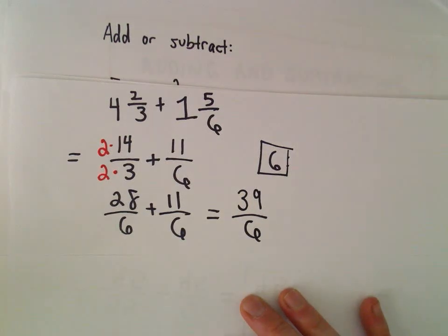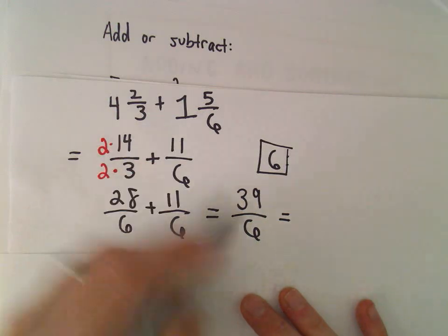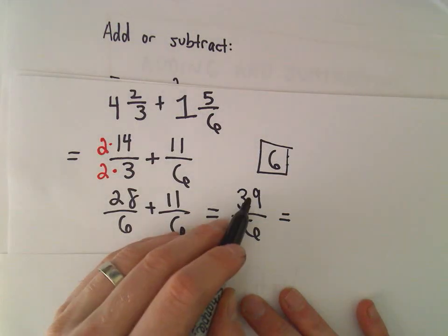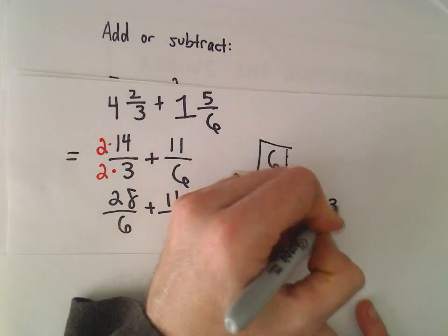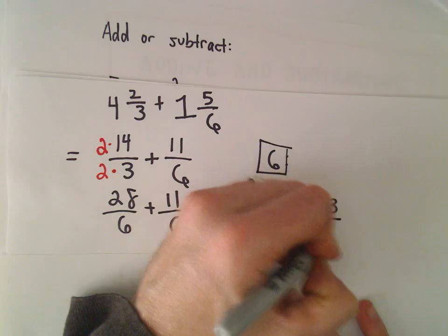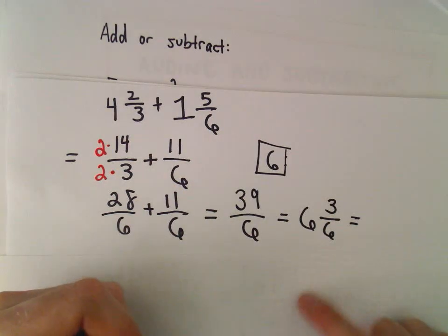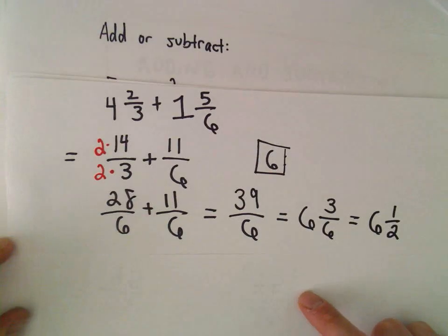And of course, you could always turn this back into a mixed number. Typically, since we started with mixed numbers, I'll put it back as a mixed number. So 6 goes into 39 six times. We would have 3 left over, our denominator of 6. And we can reduce 3 over 6 to 1 half. So our final answer here, we can write it as 6 and 1 half.